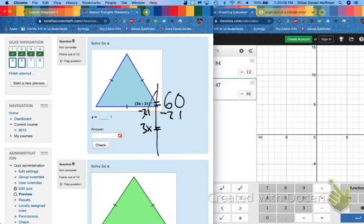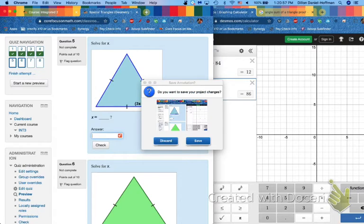3x equals 60 minus 21 is 39, divided by 3. 39 divided by 3 is 13. Set it equal to 60, you don't need the parentheses as well. Subtract, divide, or add and divide if you have a minus instead. Get your whole number - if you get a decimal you've done it wrong. Number five is done, we're moving right along.